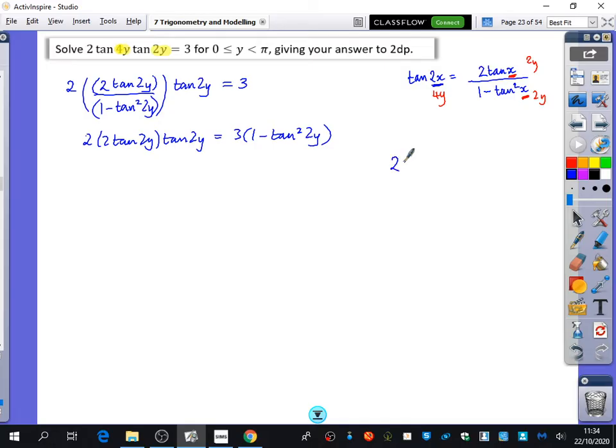It's a bit like if you had an equation like 2 multiplied by 3 fifths multiplied by 4 equals whatever, equals x. You would just multiply by the 5. You could multiply by the 5. So that you would get 2 times 3 times 4 equals 5x. Okay? It's just behaving the way that fractions behave. So I'm just going to expand this left-hand side out. So that's 2 times 2 is 4. And tan 2y times tan 2y is tan squared 2y. And on the right-hand side, I've got 3 minus 3 tan squared 2y. And then I'm just going to add the 3 tan squared 2y to the left-hand side. So that I have 7 tan squared 2y equals 3. I'm going to keep going.